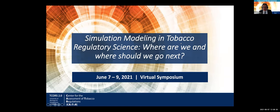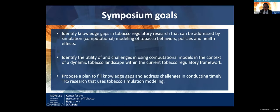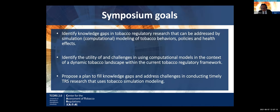I'll briefly give you an overview of our symposium. We have three major goals. One, to understand and try to capture the status quo of where we are in the use of simulation and computational modeling in regulatory science, and how models can help the tobacco regulatory process. Two, to understand challenges that computational simulation models face with the rapidly evolving tobacco landscape. And three, to think about new directions and how we should move forward to make the models and the work we do more effective in supporting the regulatory process.